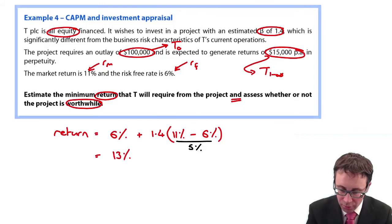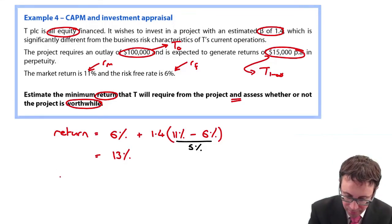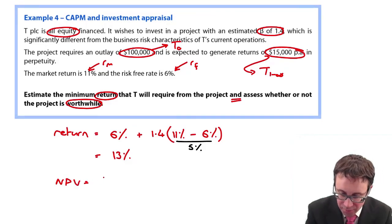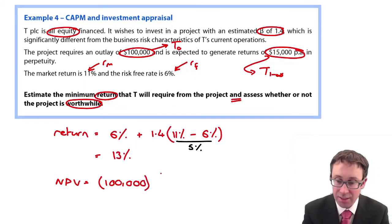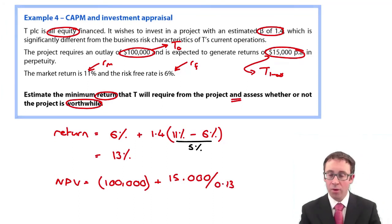If we then wanted to work out the NPV, well, the investment is $100,000 at T0. We then add on the present value of those cash flows to perpetuity.